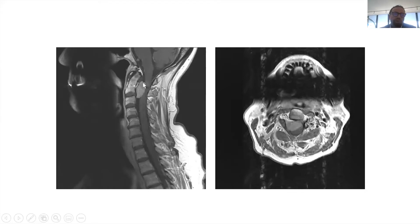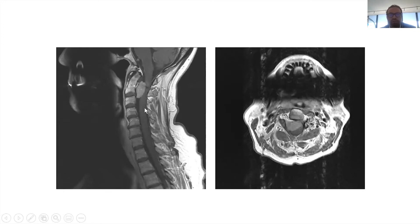What are the three compartments? You have extradural lesions, and you have intradural lesions — outside the dura and then inside the dura. For intradural lesions, they may be between the dura and the spinal cord, or intrinsic to the spinal cord — so intramedullary or extramedullary. It is important to place a lesion in a compartment because it will generate the differential diagnosis.